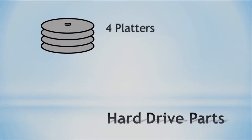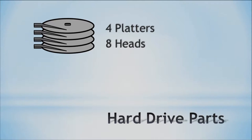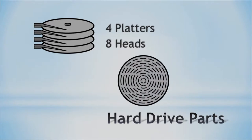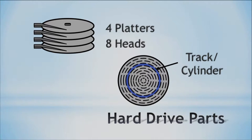Let's look at an image of the hard drive parts so you can see visually how this looks. We have four platters, and eight heads — each platter has its own read-write head. We also have our tracks and cylinders. If you think vertically with multiple platters stacked, that track would run through each one giving you a cylinder — you can visually see why we call it a cylinder. Those are the key parts of a hard drive.